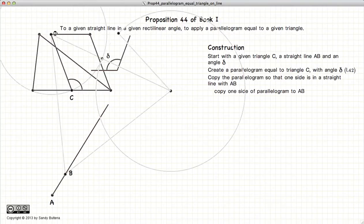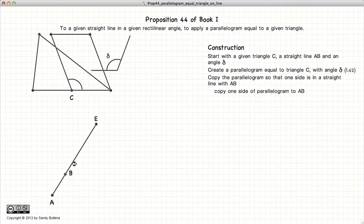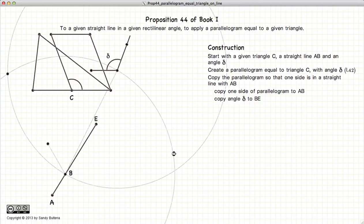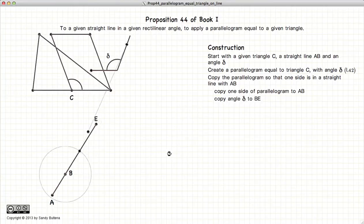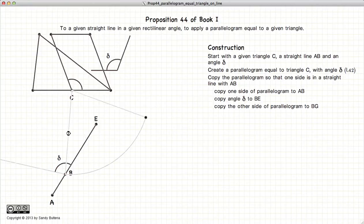So the first thing we're going to do is draw this line to BE. Next I'm going to copy the angle at point B. Next I will copy the shorter side of our parallelogram on this line from point B.